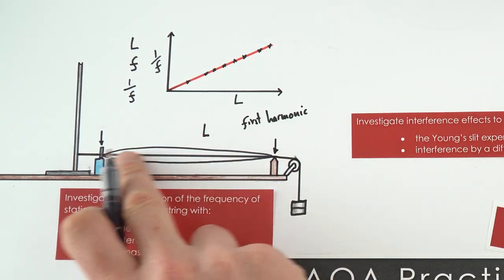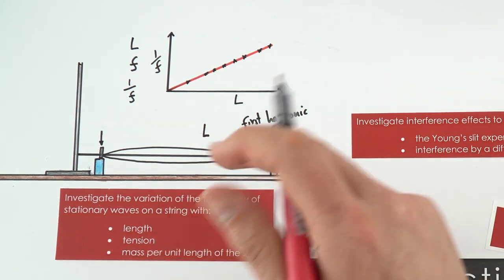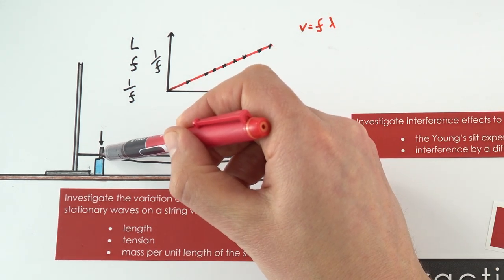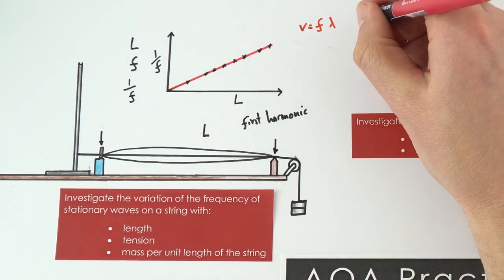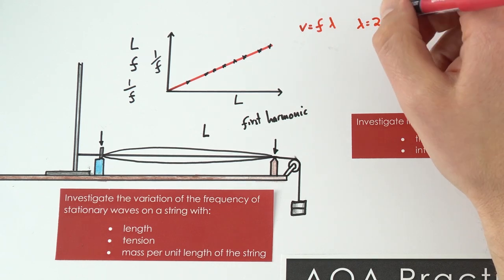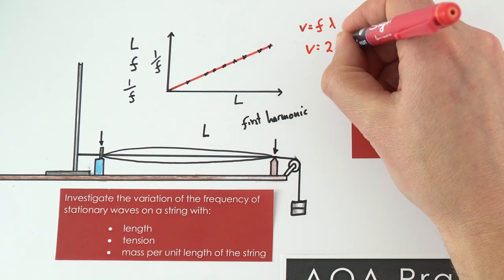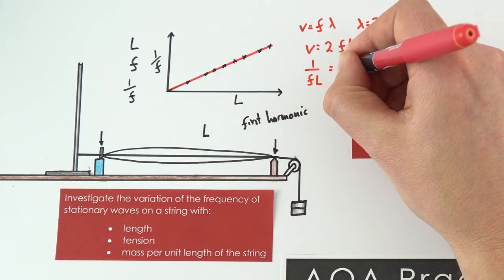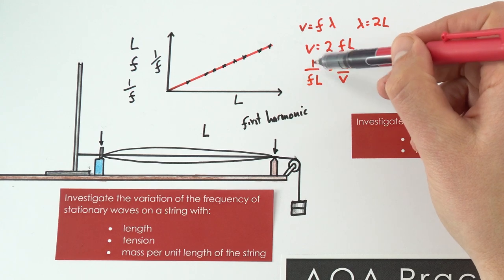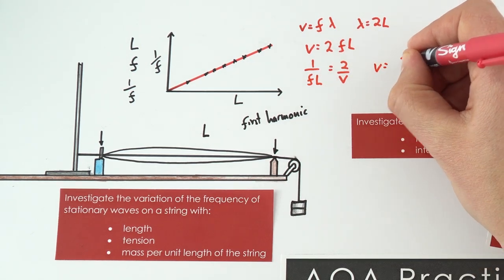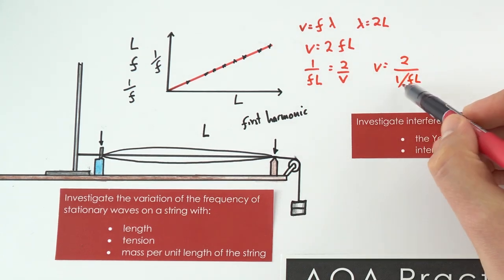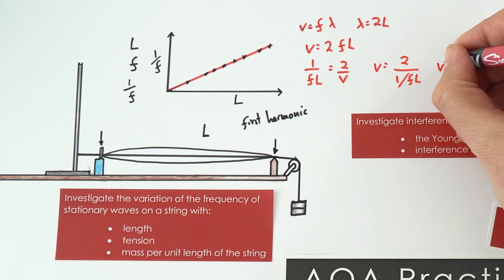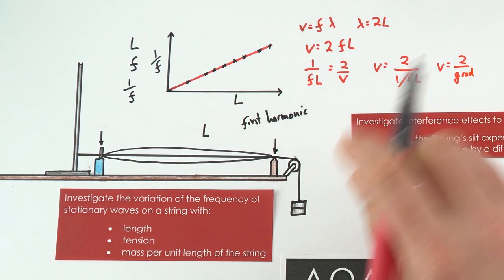We can actually work out the speed of the waves in that string. The wave speed equation says v = fλ. Because we're measuring the distance from one node to another node, that equals half a wavelength, so λ = 2L. Substituting back: v = 2fL. Rearranging: 1/f·L = 2/v. So 1/f plotted against L gives a gradient of 2/v, meaning the speed of the wave equals 2 divided by the gradient of that line.